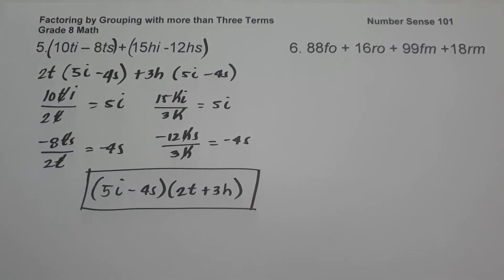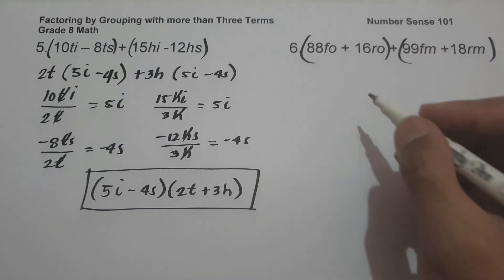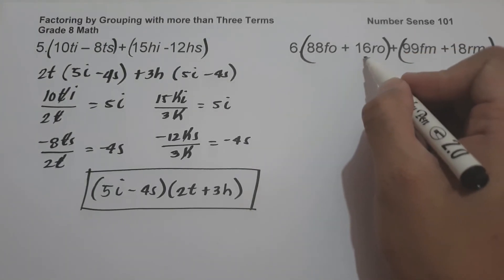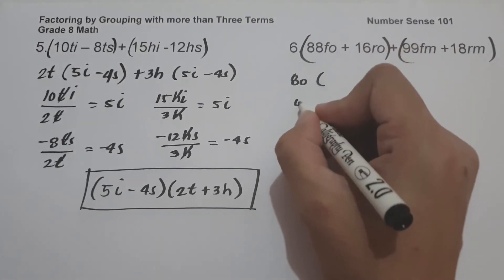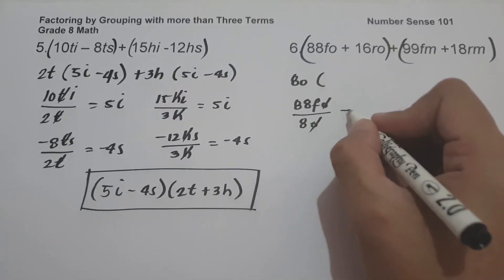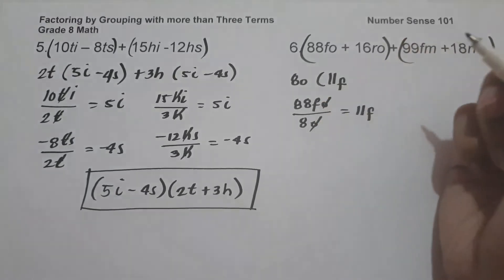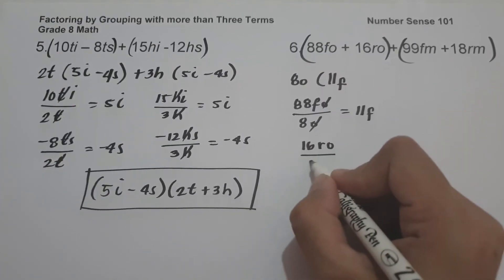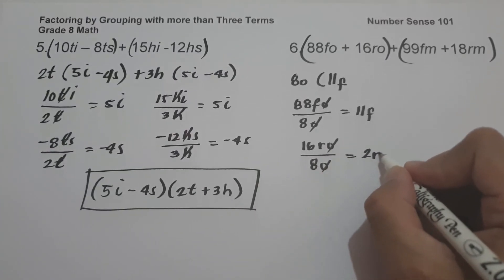On number 6, we have 88FO plus 16RO plus 99FM plus 18RM. Let us factor this by group. The GCF of 88FO and 16RO is 8O. So 88FO divided by 8O: cancel O, 88F divided by 8 gives 11F. Then 16RO divided by 8O: cancel O, 16R divided by 8 gives 2R.